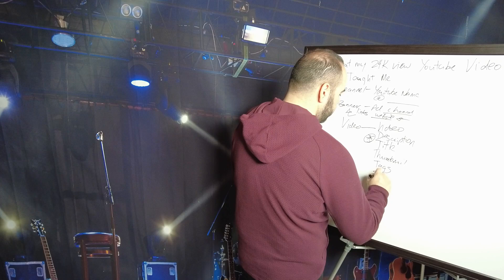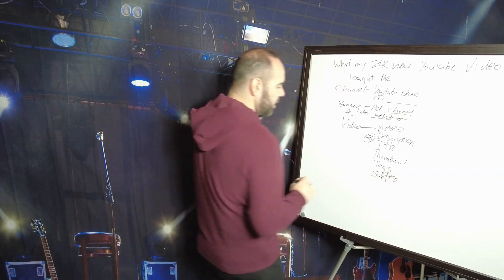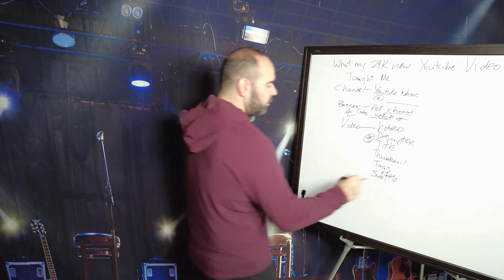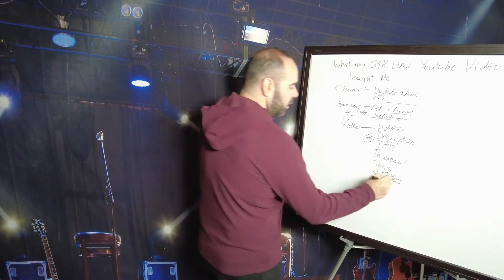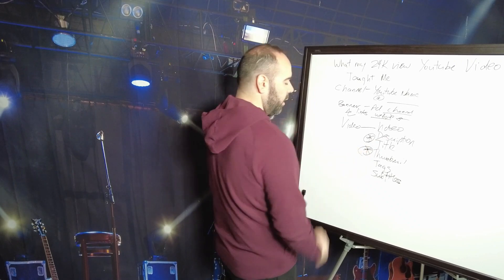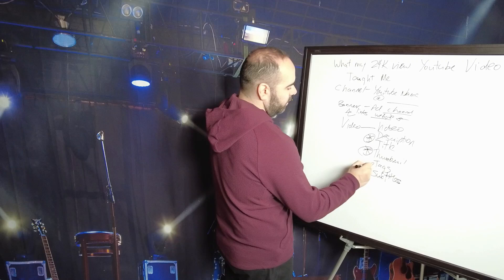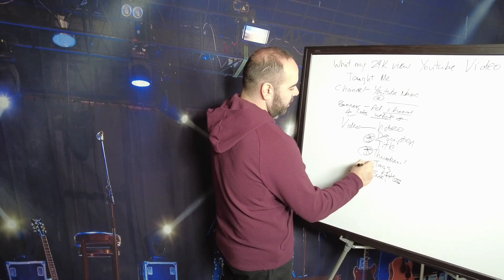Captions or subtitles that tell you like transcriptions basically. Thumbnail is also very important. I'll tell you why. So tags will tell YouTube what kind of category your video falls into. Now how closely YouTube follows this is very debatable. And then subtitles probably help with people watching your video, especially if they're in a setting where they can't play audio.